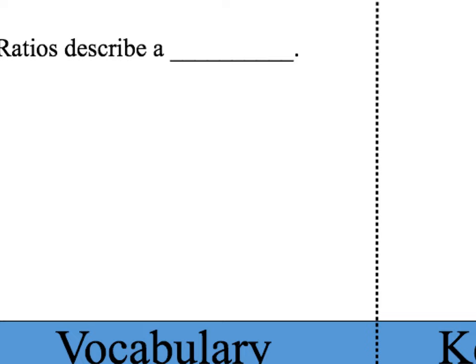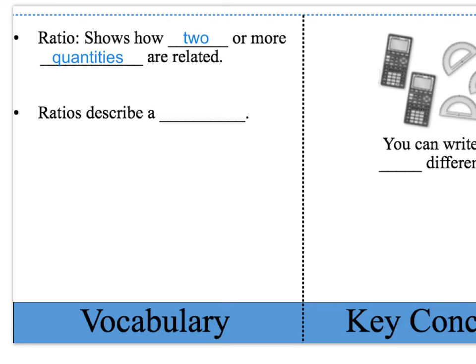Let's start off by talking about the vocabulary. The first vocabulary word is ratio. Ratios show how two or more quantities are related — that just means to compare two different things. Ratios also describe a pattern. Whenever you see the words 'for every,' that usually indicates a ratio, meaning you're comparing two different quantities, like dogs and cats.